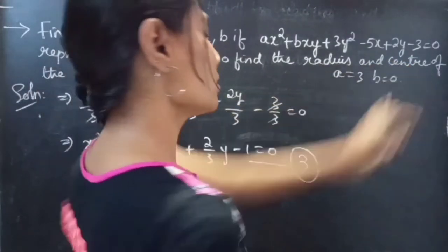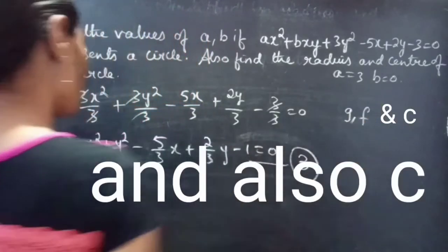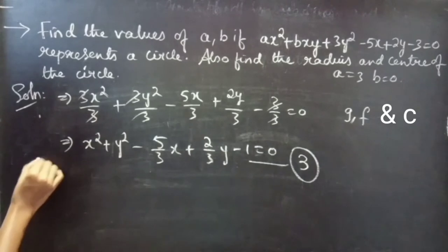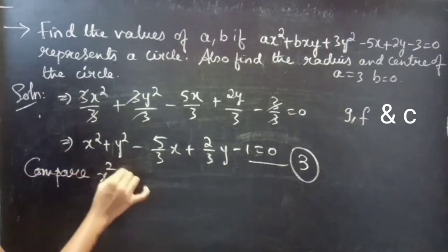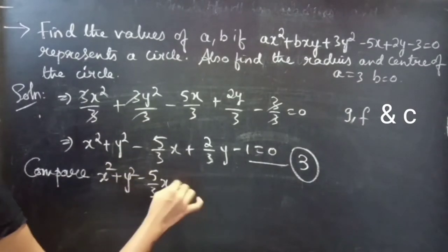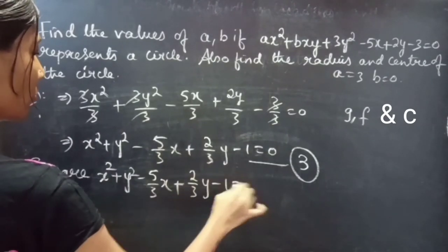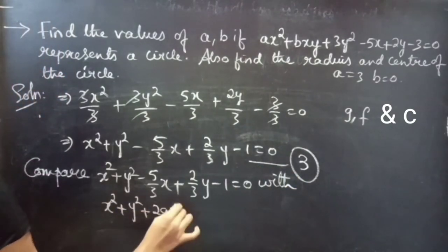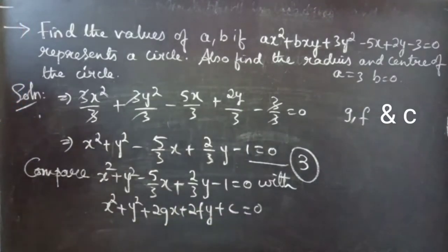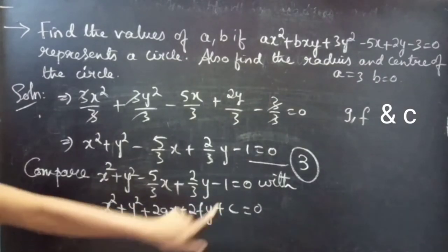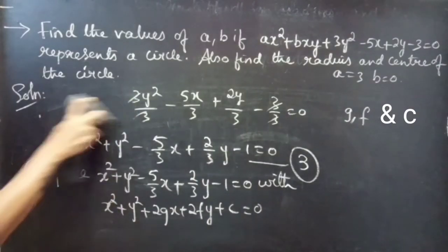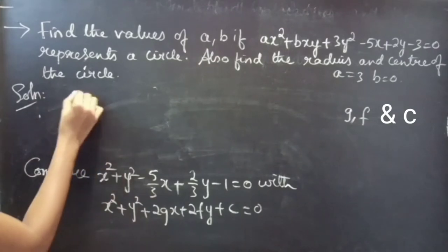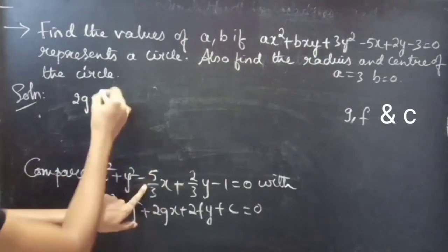We are asked to find the radius and center. To do that we need the values of g and f. We compare equation 3 with the standard circle equation 2. Comparing x squared plus y squared minus 5/3 x plus 2/3 y minus 1 equals 0 with x squared plus y squared plus 2gx plus 2fy plus c equals 0. Comparing the coefficients of x, we get 2g equals minus 5 over 3.